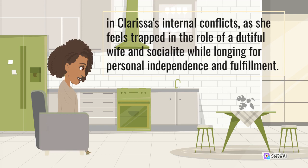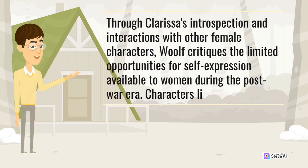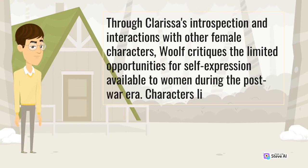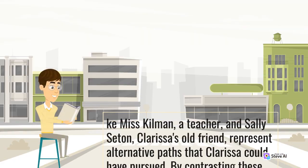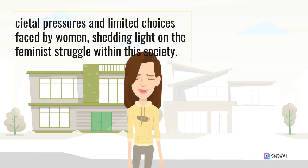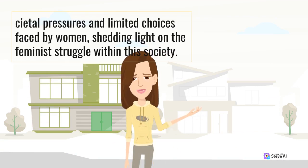Clarissa feels trapped in the role of a dutiful wife and socialite while longing for personal independence and fulfillment. Through Clarissa's introspection and interactions with other female characters, Woolf critiques the limited opportunities for self-expression available to women during the post-war era. Characters like Miss Kilman, a teacher, and Sally Seton, Clarissa's old friend, represent alternative paths that Clarissa could have pursued. By contrasting these characters with Clarissa, Woolf highlights the social pressures and limited choices faced by women, shedding light on the feminist struggle within this society.